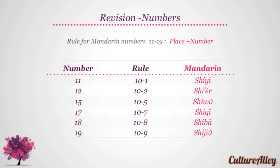Now let's take a look at numbers 11 through 19. The general rule for Mandarin numbers 11 to 19 is place plus the number. Therefore, we see that 11, which is ten and one, becomes shi yi.